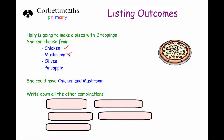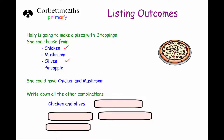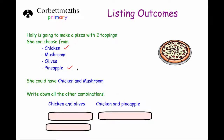So with chicken and mushroom, let's keep the chicken the same and now do chicken and olives. That could be another option. After chicken and mushroom and chicken and olives, the next one I would consider would be chicken and pineapple. So we've now done all the pizzas that could have chicken on it: chicken and mushroom, chicken and olives, chicken and pineapple.